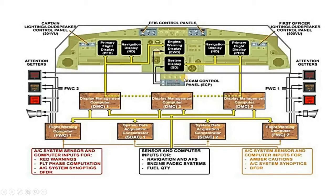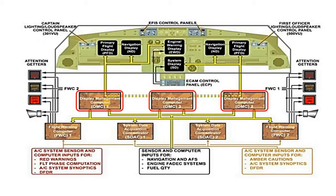These displays get information from the DMCs — Display Management Computers. The information displayed on the PFDs and NDs is computer-based. These computers are called DMC 1, 2, and 3. DMC 1 is for the pilot, DMC 2 is for the co-pilot, and DMC 3 provides information for the ECAM system.